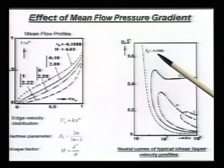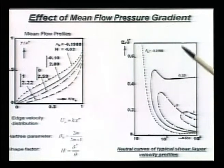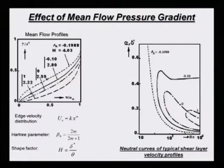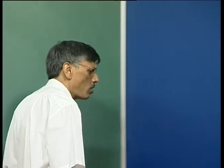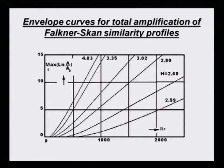For the incipient separation profile, the neutral curve does not even close - it just remains open. So it is going to remain unstable from a very low frequency to a very large frequency. This is of course an attribute of your linear theory, and this basically gives you an idea of how to interpret flow instability from linear theory. This was done by Arnall and his group, and this picture reveals quite a few features that one would expect directly from linear theory.